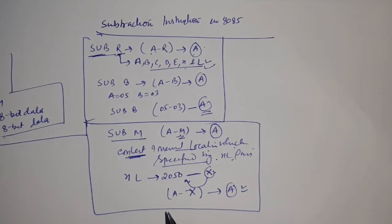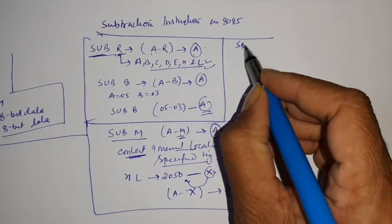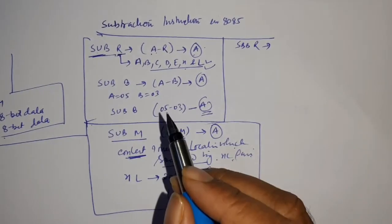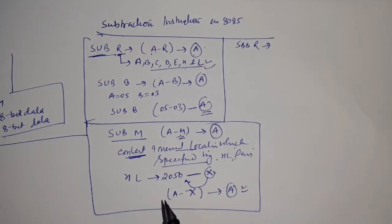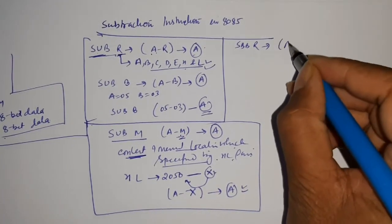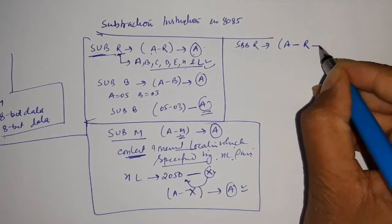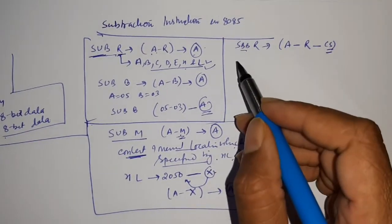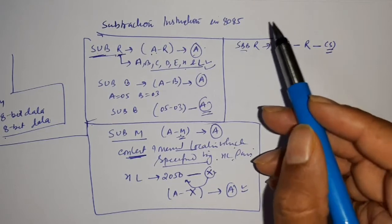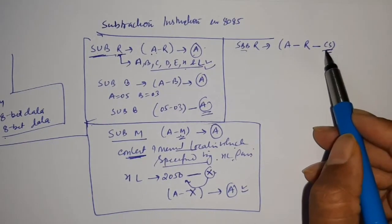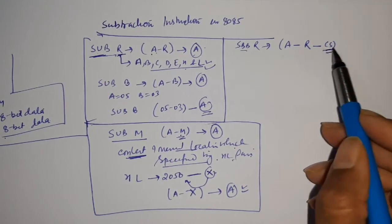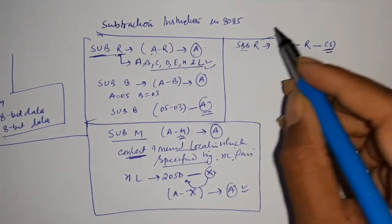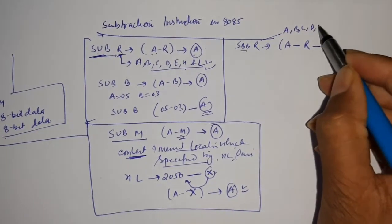Now moving forward to our next instruction: SBB r. The meaning of SBB r is that the content of the register and the borrow flag are subtracted from the content of the accumulator and the result is placed in the accumulator. This becomes A minus r minus carry flag (CY). The carry flag here acts as borrow. Suppose you performed some operation before this instruction — the value of the carry flag will be 0 or 1. If the value is 1, then you subtract 1; if the value of the carry flag is 0, then you subtract 0. R can be replaced by A, B, C, D, E, H, or L.